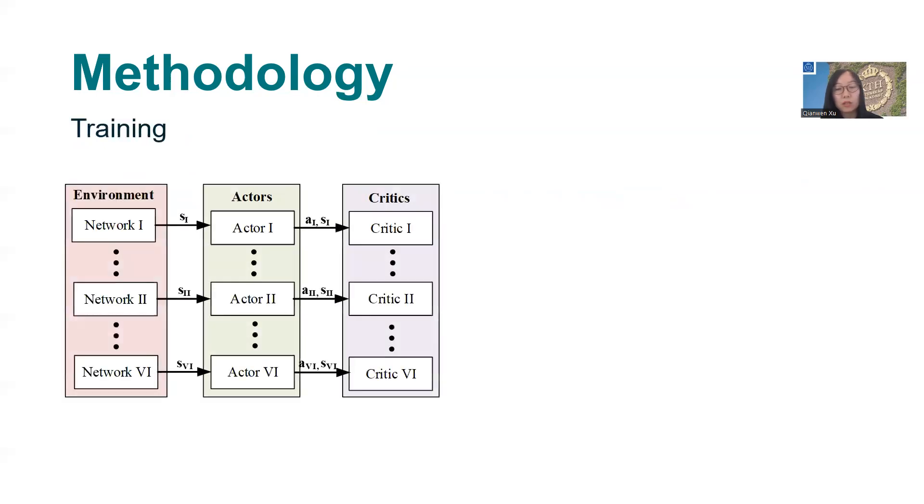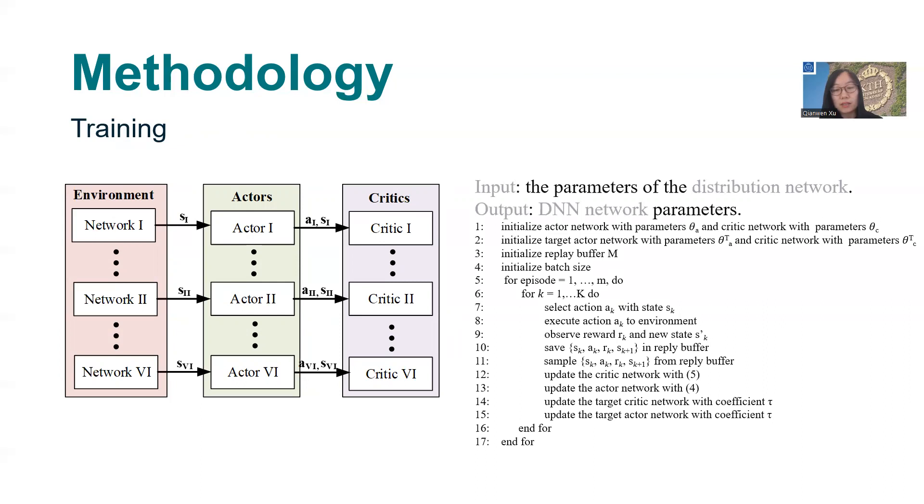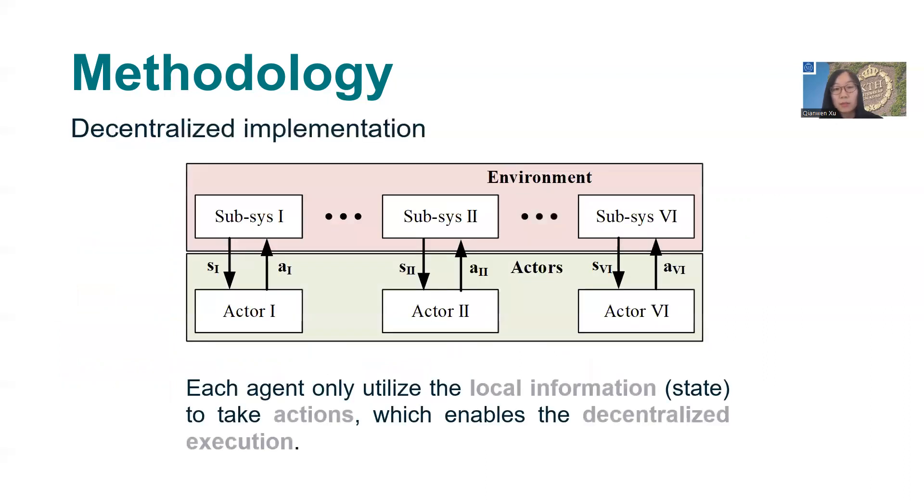Then we develop a multi-agent deep reinforcement learning that achieves the centralized training and decentralized implementation. For the training, the actor network of each agent gets the local state and gives action, and the critic network gets the global information of all states and action. After training, we can get parameters of the actor network and the critic network. Then, for the implementation, we remove the critic network and implement the actor network for each converter. So in real-time, each converter can interact with the environment and get the local voltage measurement from the environment and automatically give the optimal reactive power support without the communication. Therefore, we can achieve real-time decentralized implementation.